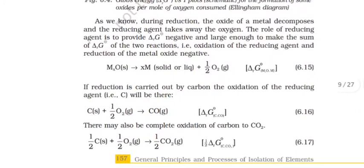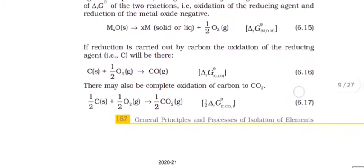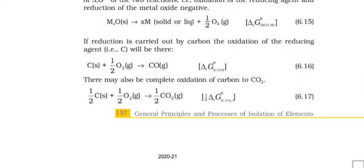As we know during reduction the oxide of metal decomposes and the reducing agent takes away the oxygen. The role of reducing agent is to provide ΔG negative and large enough to make the sum of ΔG of the two reactants, that is oxidation of reducing agent and reduction of metal oxide, negative. If reduction is carried out by carbon the oxidation of reducing agent will be C plus half O2 gives CO.